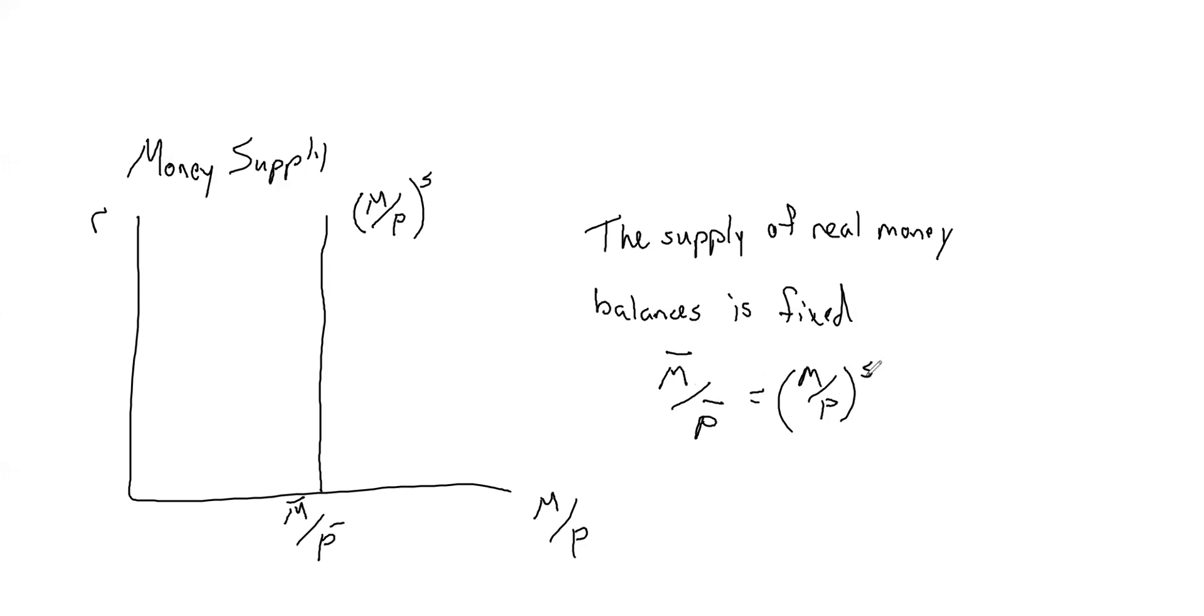Now the other side of that, money demand is going to depend on the interest rate. As it becomes costlier for people to hold money, they're going to try to hold less money. They're going to hold instead some kind of asset that's going to bear interest. If interest rates are really high, you're going to try to take advantage of that rate of return. And so we're going to have basically the same money demand curve that we had in chapter 4.